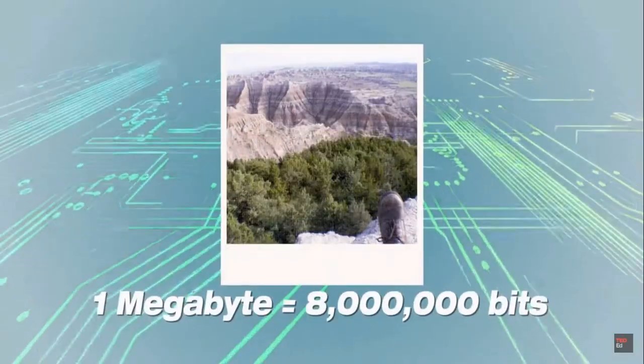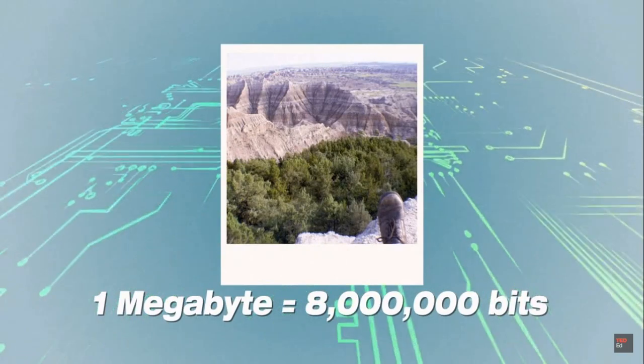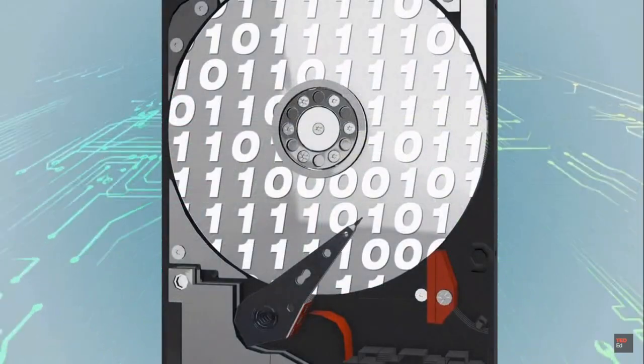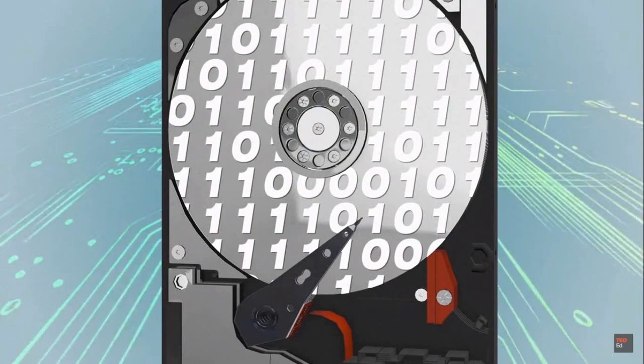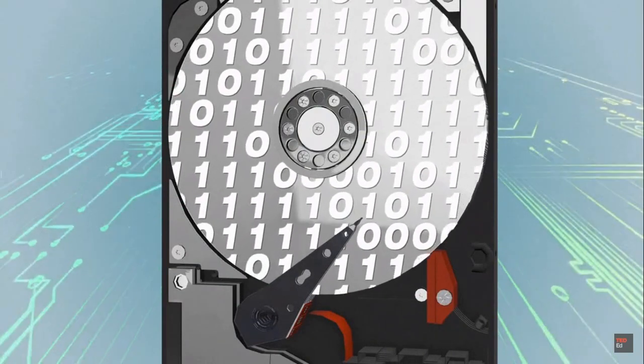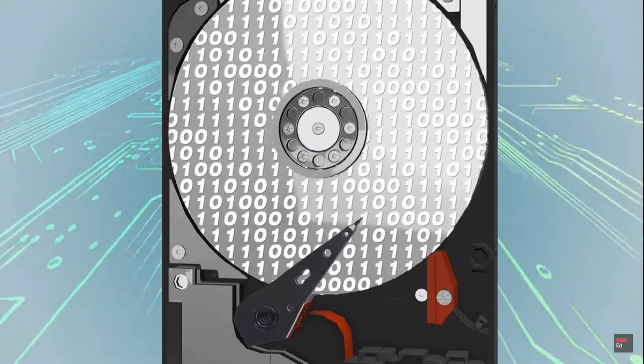And your average photo takes up several megabytes, each of which is eight million bits. Because each bit must be written onto a physical area of a disk, we're always seeking to increase the disk's aerial density.